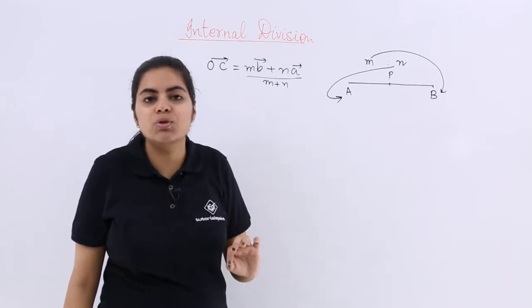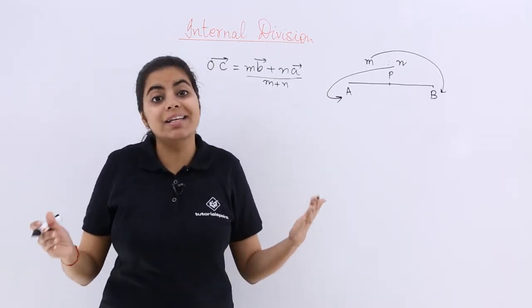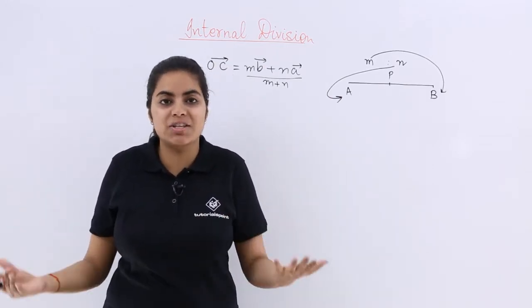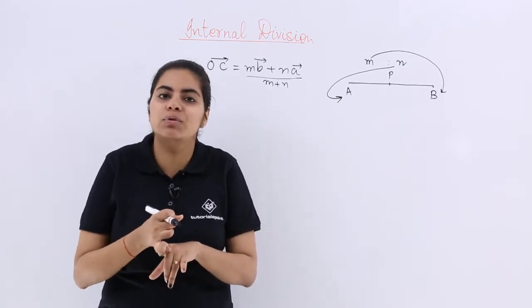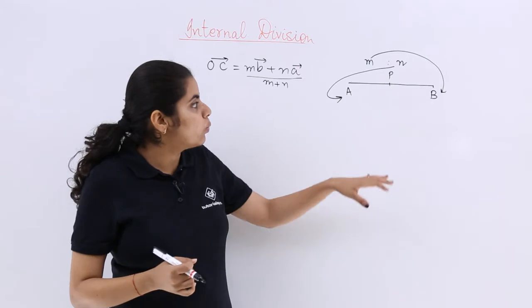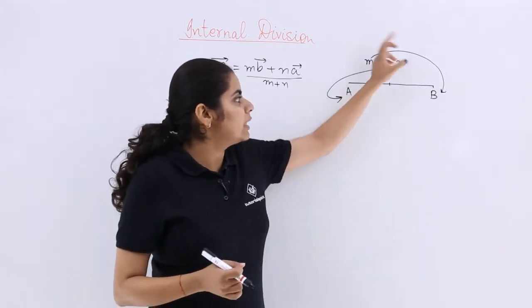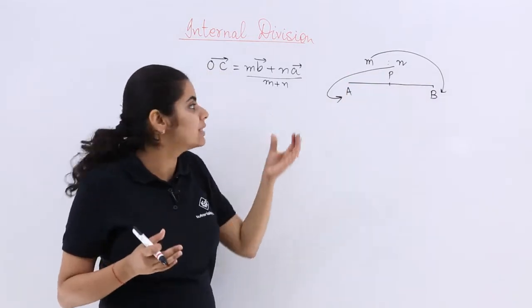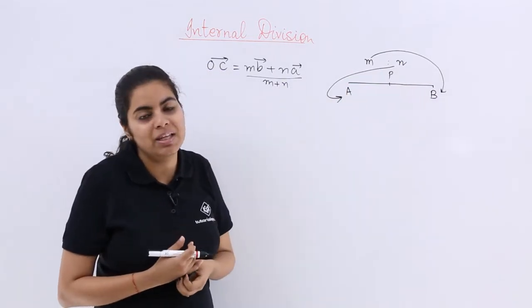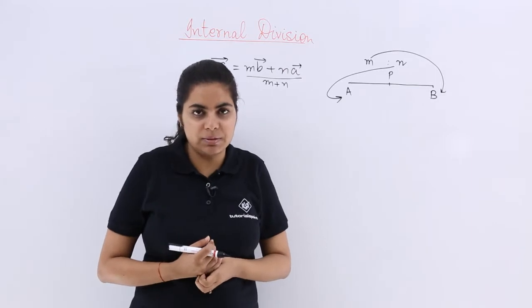So what we are supposed to find out, again I am telling you a line segment is given, there is a point, this has to be divided. The line segment has to be divided with the help of the point. So what to do? You have to cross multiply the ratios, I mean M with the farther one, N with the farther one, plus them in the denominator. Now certain cases are possible.